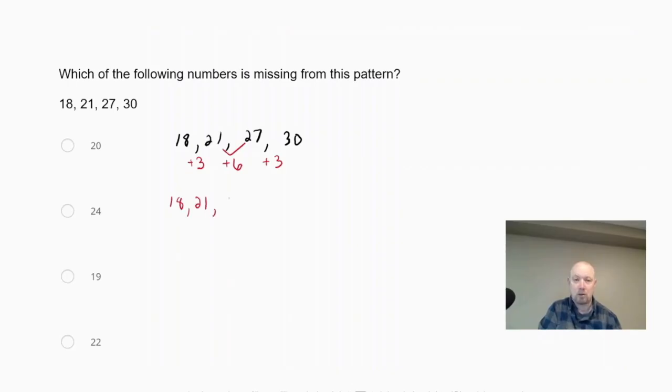So if I add 3 to 21, I get 24, 27, and 30. So now I've completed and found the missing term, 24.